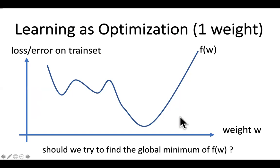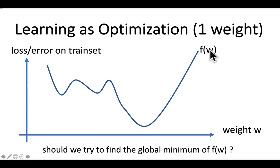Mathematically, we look at the average loss on the training set — the training error — as a function of the weight vector. In principle, there is an objective function whose value for a given weight vector is the training error. But in practice, you can never probe this function at all possible weight vectors, because there are too many. The ultimate goal in deep learning is to find the minimum of this objective function.